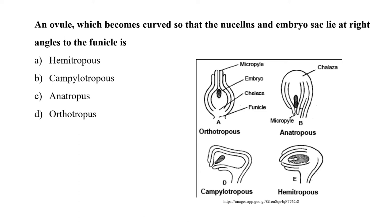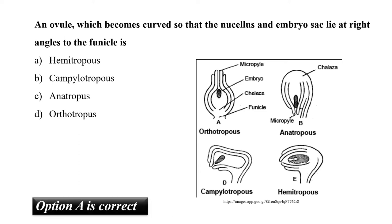In the case of hemitropous ovule, the ovule becomes curved so that the nucellus and embryo sac lie at right angles to the funicle. The body of the ovule is placed transversely at right angles to the funicle, and the micropyle and chalaza lie in one straight line. So our correct option is A, that is hemitropous ovule.